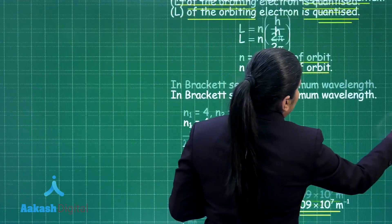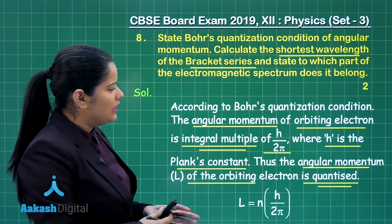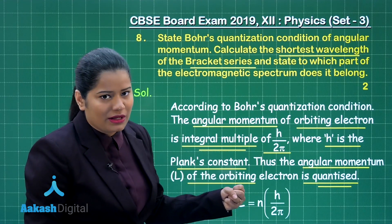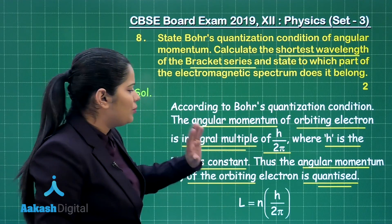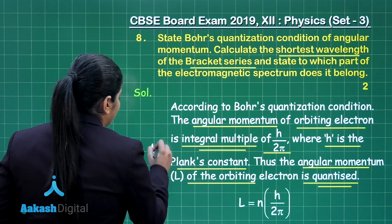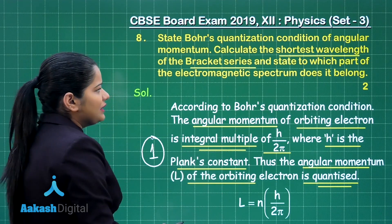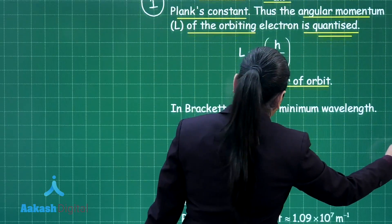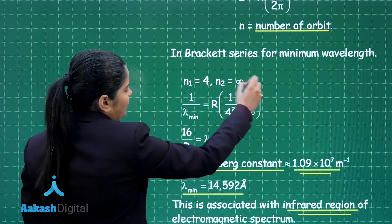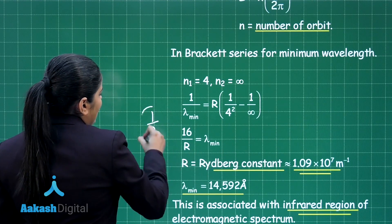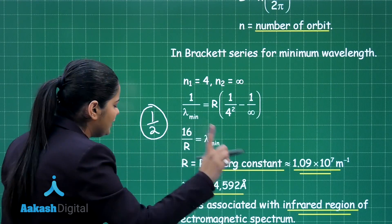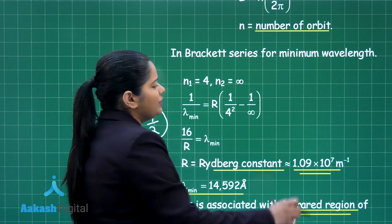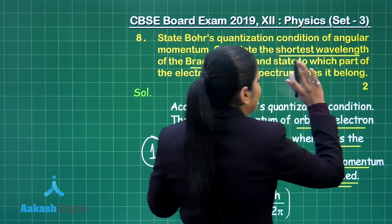Let us see how many marks you are going to get for writing this answer. You were first asked to state Bohr's condition for angular momentum — writing about angular momentum quantization gets you one mark. You were then asked to calculate the shortest wavelength for the Brackett series, and for that calculation you get half a mark. The final half mark you get when you write that this belongs to the infrared region of the electromagnetic spectrum. This is how you score two out of two marks for this question.